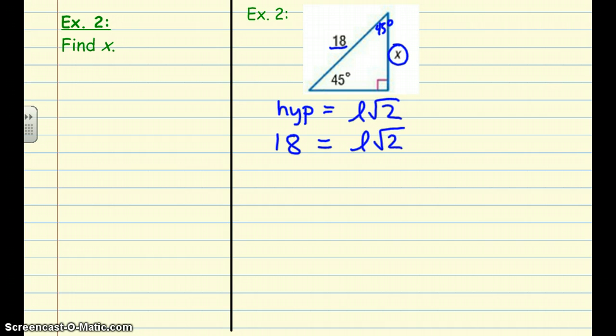Now I'm going to divide using what we know about solving equations. Divide both sides of our equation by square root of 2. On the left-hand side that leaves us with L. L is representing our leg length. What we can do is multiply both the top and bottom by square root of 2 so we get rid of that radical in the bottom.